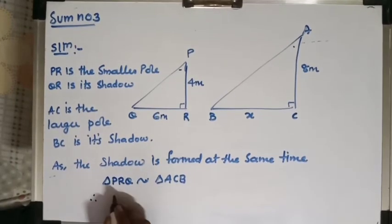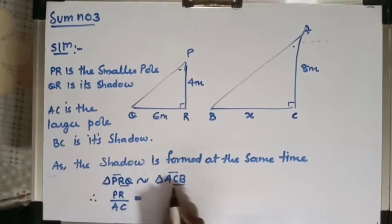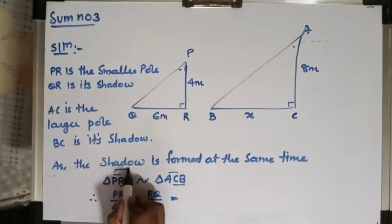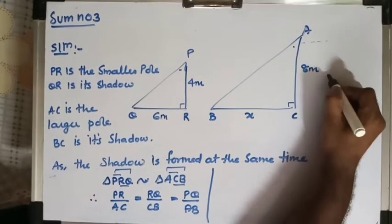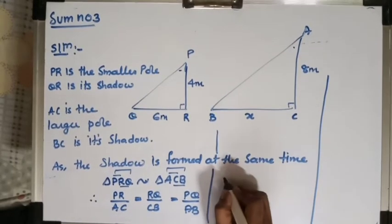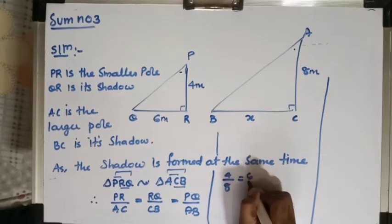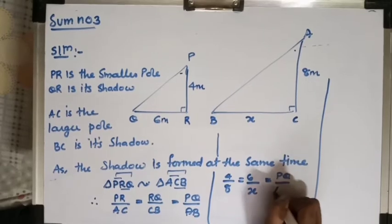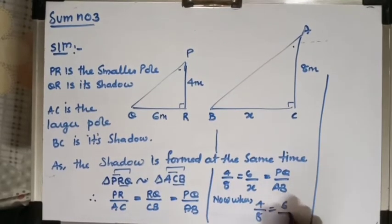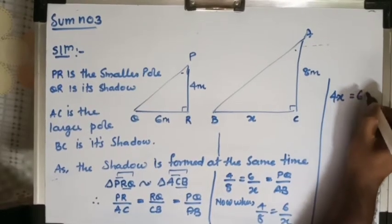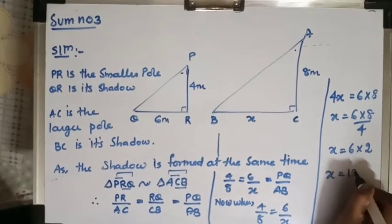Whenever two triangles are similar, their sides are in proportion: PR upon AC equals RQ upon CB equals PQ upon AB. Substituting values: PR is 4, AC is 8, RQ is 6, and BC is X. Taking only two ratios: 4 upon 8 equals 6 upon X. Cross multiplying: 4X equals 48, so X equals 12 meters.